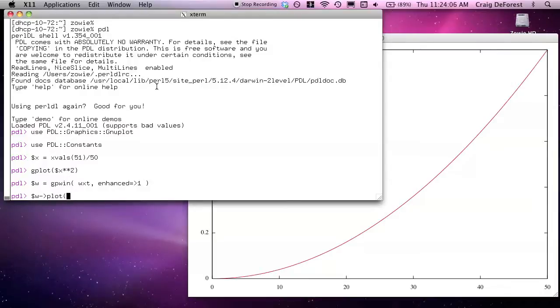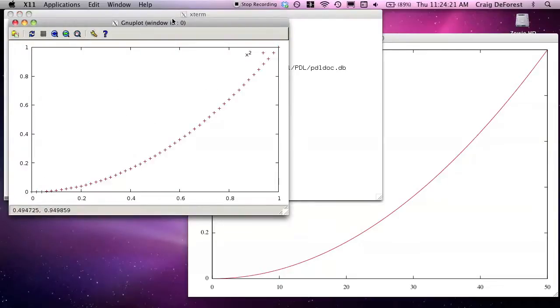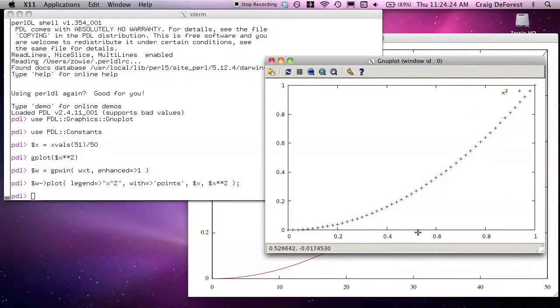So let's make the same plot now, legend x squared width is, let's do points instead of the default lines, and x and x squared.